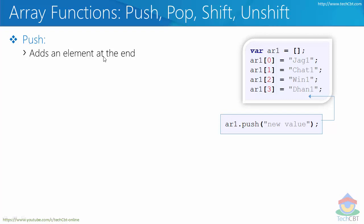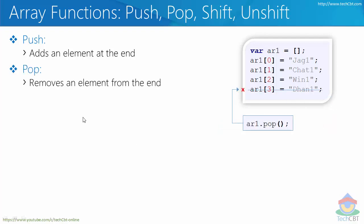What push really does is add an element at the end. So whenever you type a new value and call push on the array, it is going to add a new memory location. In this example, it is going to be array index 4 — the next successive location — and that index 4 will be assigned with the new value. Similarly, there is also pop, which essentially removes the last index location.